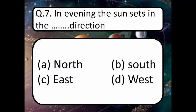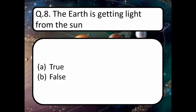In the evening, the Sun sets in the dash direction. Read the options: North, South, East, or West. The correct answer is West. Next: the Earth is getting light from the Sun — is it true or false? Think about it. The correct answer is True — the Earth gets light from the Sun.